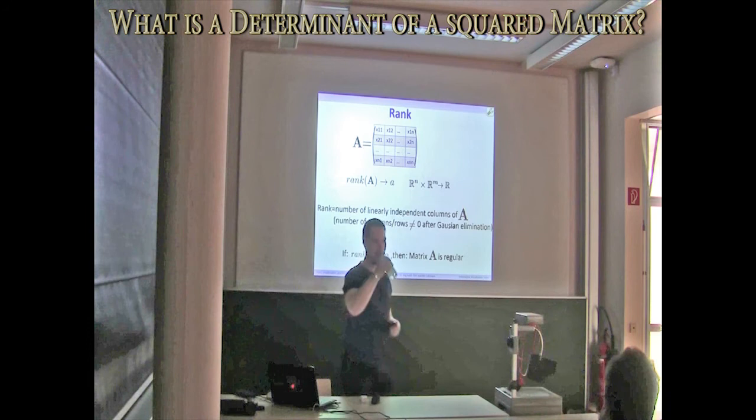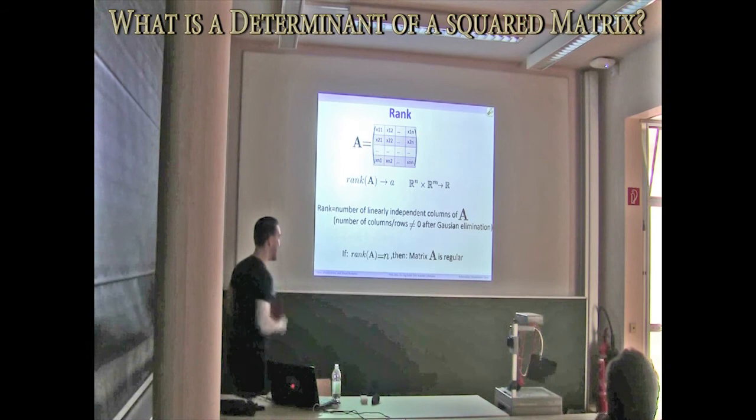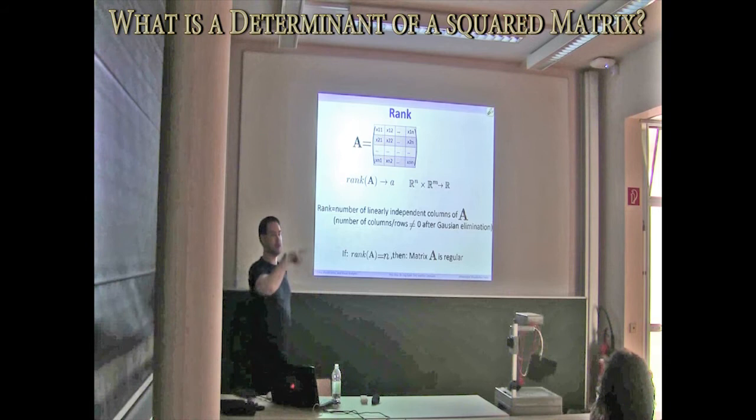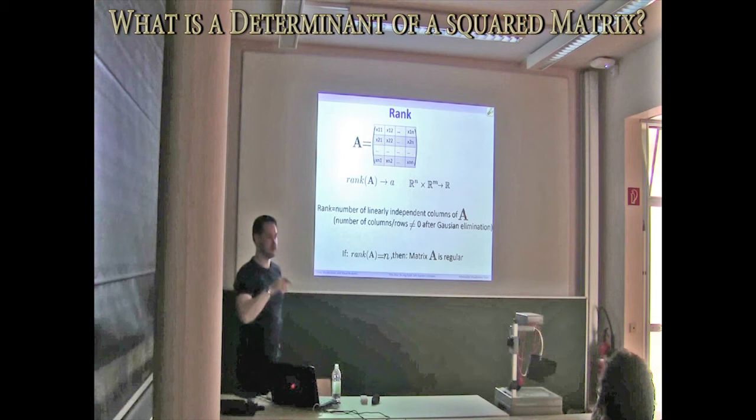For the four elements, you just take the diagonal minus the other diagonal. No, no, no. I mean, you describe the way how you can compute the determinant for two-by-two matrices. Almost, yes, but that's not what the determinant means.